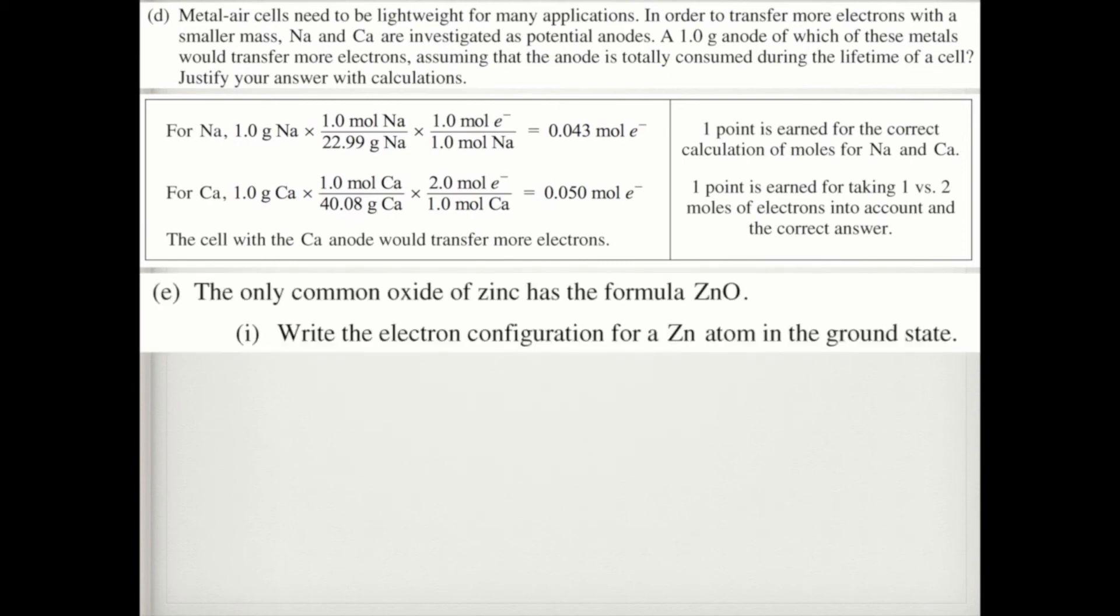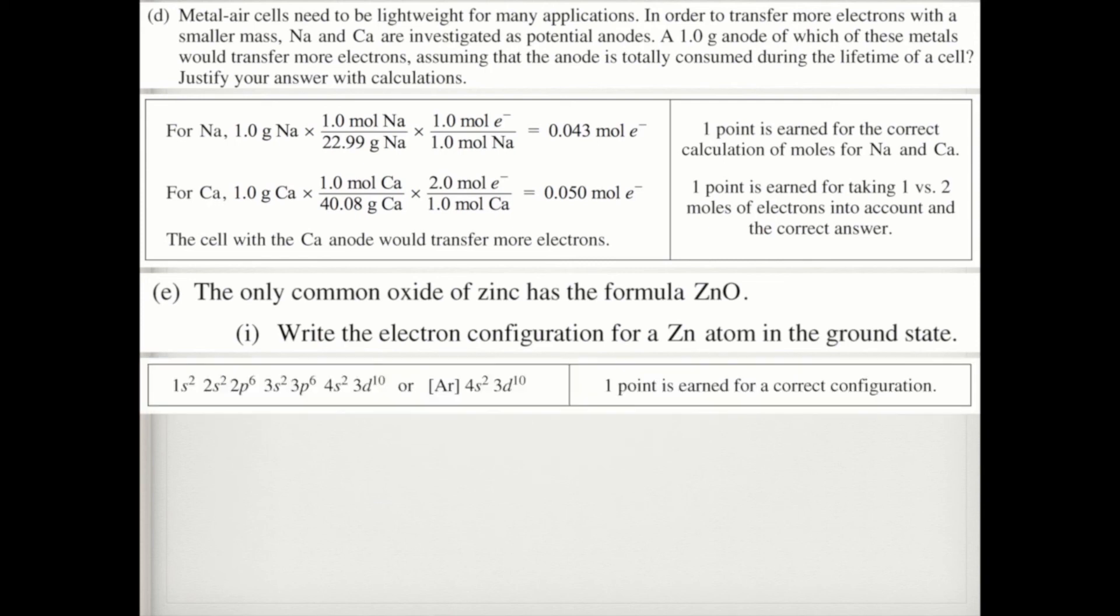In part E, it says the only common oxide of zinc has a formula zinc oxide. Write the electron configuration of zinc in its ground state. So this should be pretty easy. 1s2, 2s2, 2p6, 3s2, 3p6, 4s2, 3d10. Or you could write the shorthand, which would be argon in brackets, 4s2, 3d10. And you got one point for the correct electron configuration.